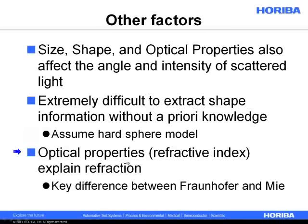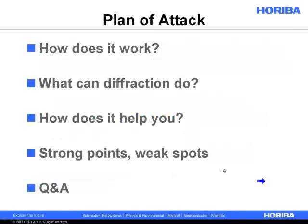Optical properties basically means refractive index, and it helps explain refraction. This is also the key difference between the Fraunhofer approximation and the Mie scattering theory — this is why Fraunhofer runs out of steam around 20 microns, and Mie can be carried through into the nanometer range. At the end of the presentation, I'll have several previously recorded webinar references if you'd like to learn more about diffraction theory.